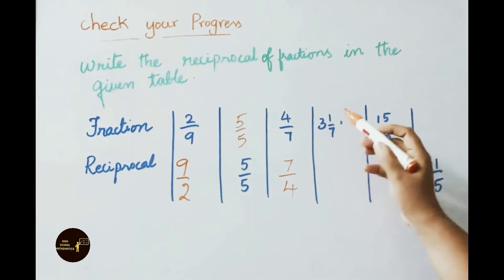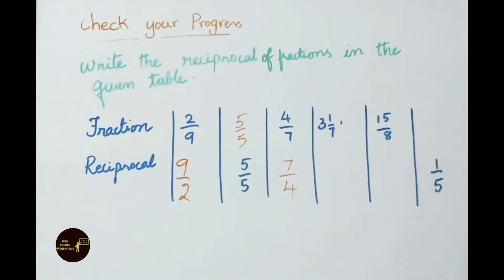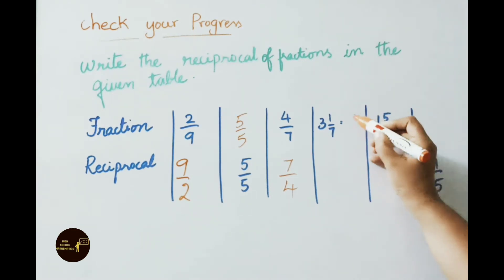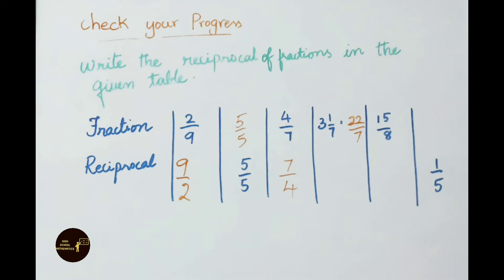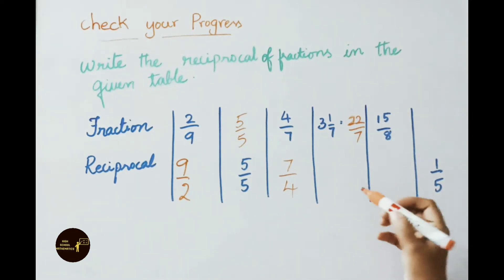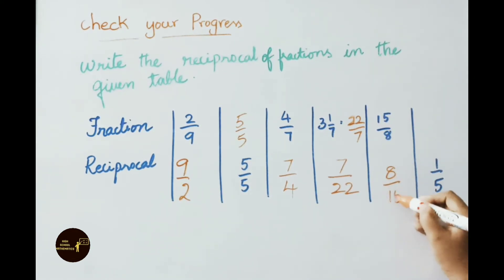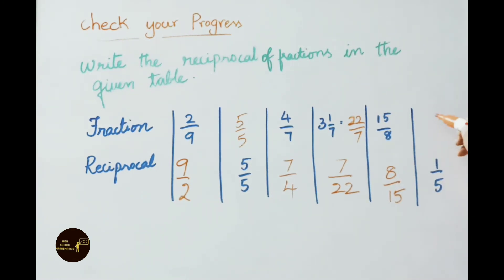See next fraction: 3 and 1/7. Convert this mixed fraction to improper. 7 × 3 = 21, plus 1 = 22. Write down 22/7. Now we have to write reciprocal for 22/7, that is 7/22. See now: 15/8, reciprocal is 8/15. Here they have given reciprocal 1/5, we have to write the fraction. Reciprocal for this is 5/1, that is nothing but 5.